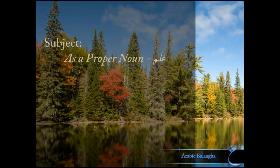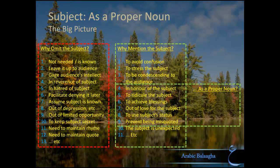In our previous lesson, we discussed why you would express the subject of your sentence as a pronoun. In today's lesson, we want to discuss why you would express it as a person's name. Remember, we said that mentioning the subject was a default, but then we talked about reasons why you would omit the subject, and then reasons why you would want to especially mention it.